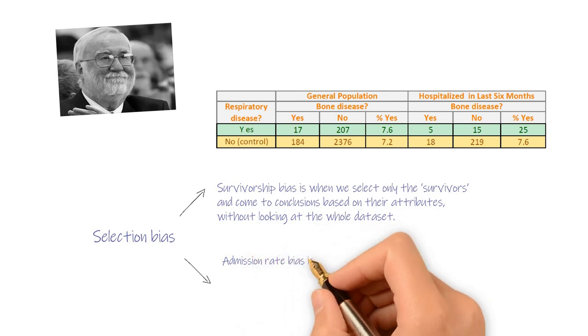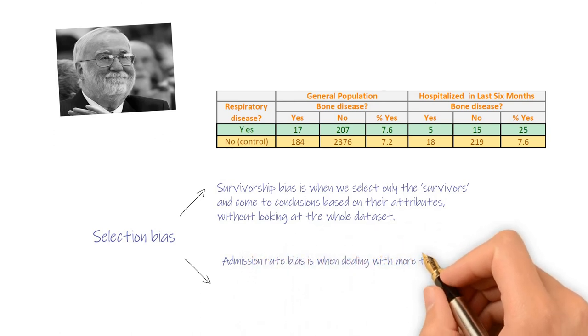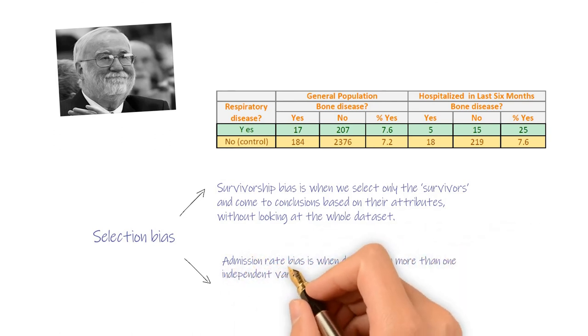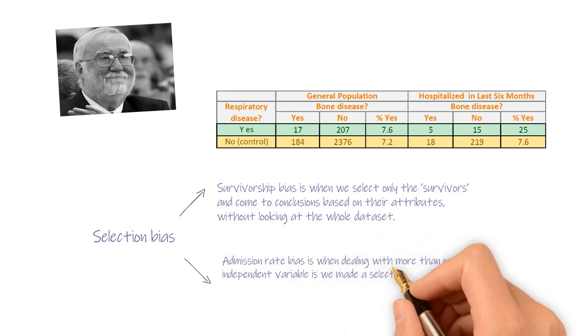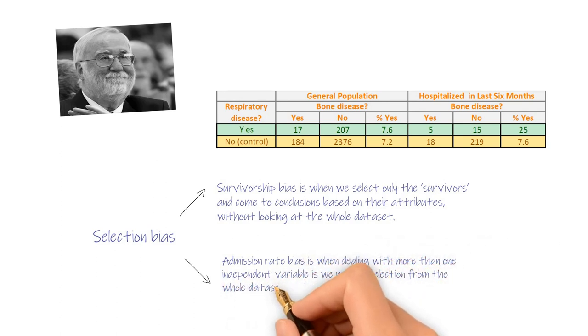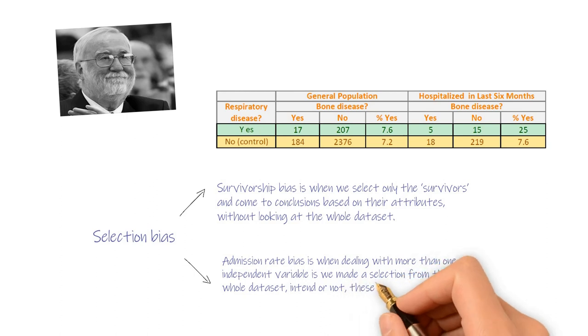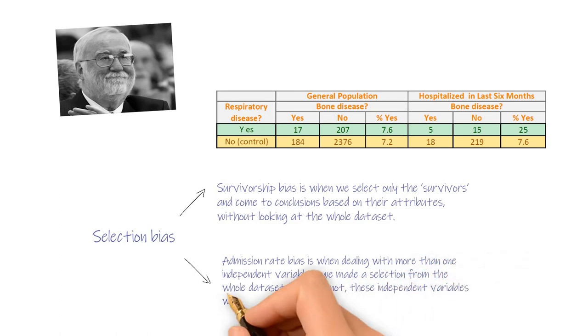Admission rate bias is when dealing with more than one independent variable. We made a selection from the whole dataset, intended or not. These independent variables will begin to show some kind of correlation.